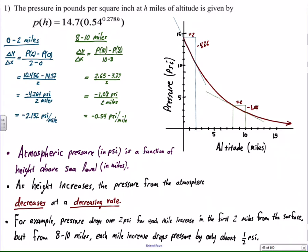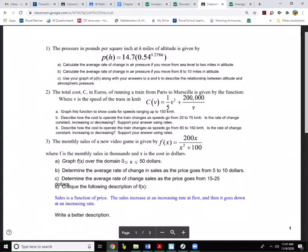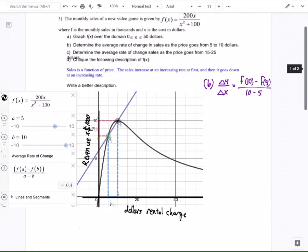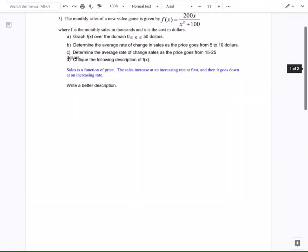Now, in some cases, there's a lot going on and it could become challenging. So I just wanted to show you another example just for the basics. We can skip to number three from that same problem set. We have a function telling us the monthly sales of a video game as a function of the charge, what we charge for the rental. X is the cost in dollars, and F is the monthly sales in thousands.